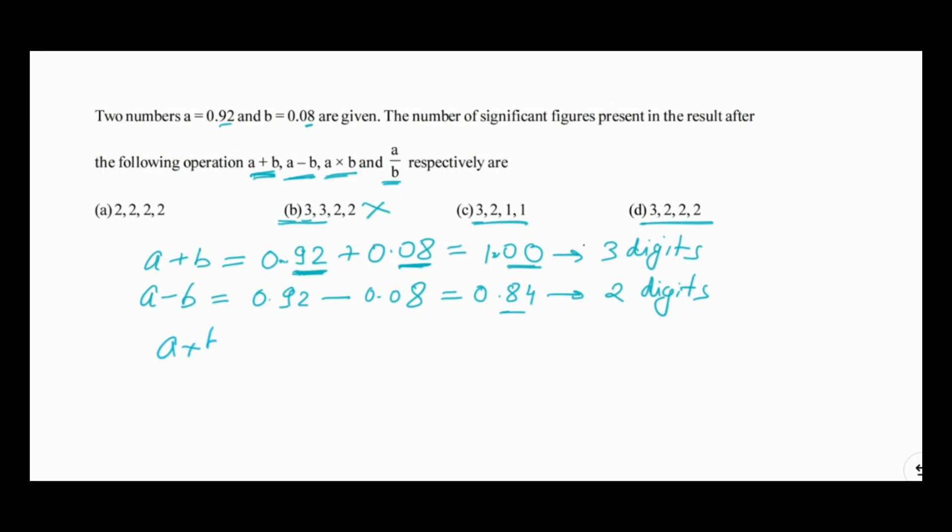In multiplication and division, the rules of significant digits state that the result should have the same number of significant digits as the number with the least. A has two significant digits, B has only one significant digit. So the number of digits should be one only, because B has the minimum. This is given in option C. So the correct answer to this question is C. Thank you.